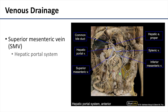Venous drainage for these portions of the small intestine is strictly into the portal system via the superior mesenteric vein. Remember that the superior mesenteric vein joins with the splenic vein to actually form the hepatic portal vein, as you can see in this image.